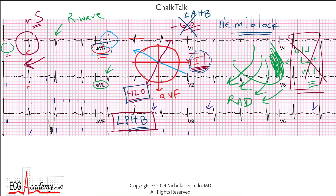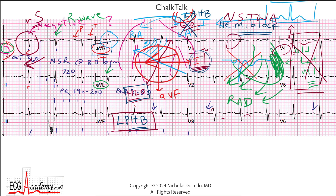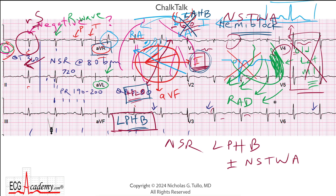Let's look at the precordial leads quickly. We can see the R-wave progression is okay — V4 is the point where the R wave grows taller than the S wave, so that's a pretty normal transition point. The T-waves do look upright, although one looks a little biphasic and funky. Some people would call these nonspecific T-wave abnormalities, but that's a very soft finding.